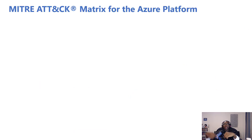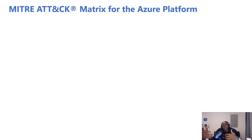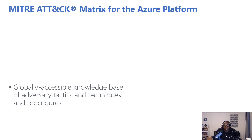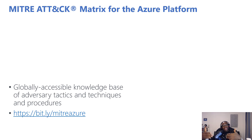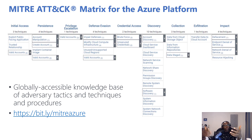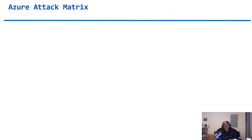When it comes to offensive security of Azure, the MITRE framework usually comes up. This describes the tactics, techniques, and procedures that attackers use against Azure environments — a globally accessible knowledge base of adversary TTPs. You can access the framework for Azure at the URL on screen. That said, I personally prefer using my own Azure attack matrix, which I'll show you now.